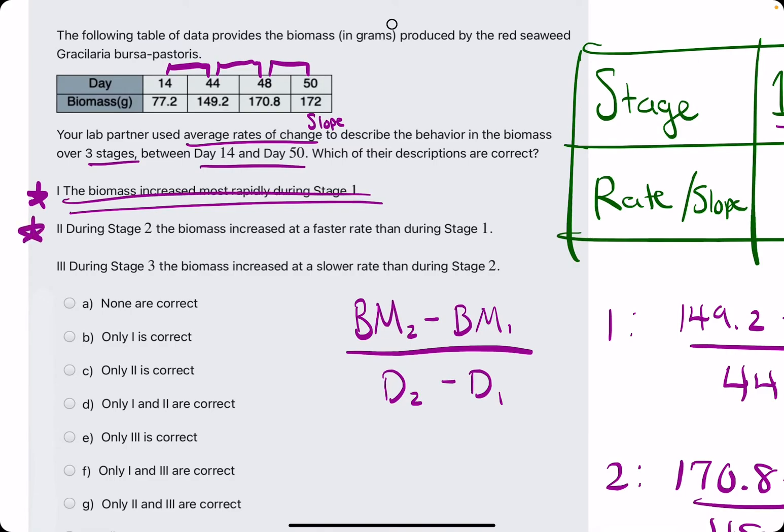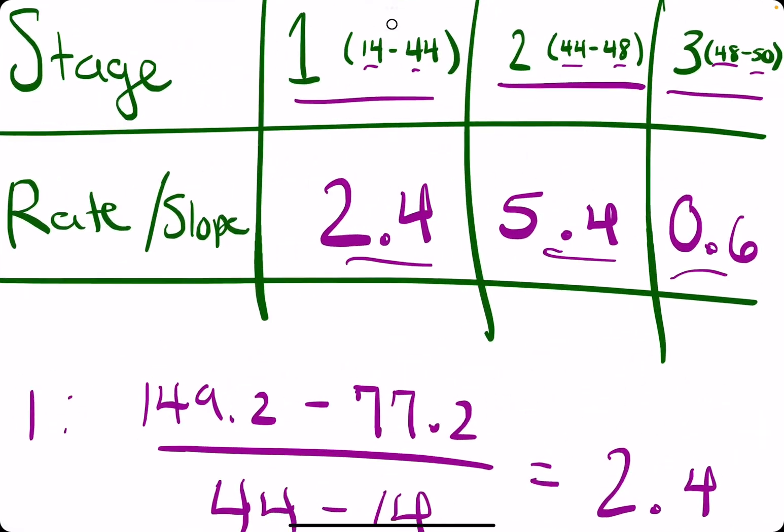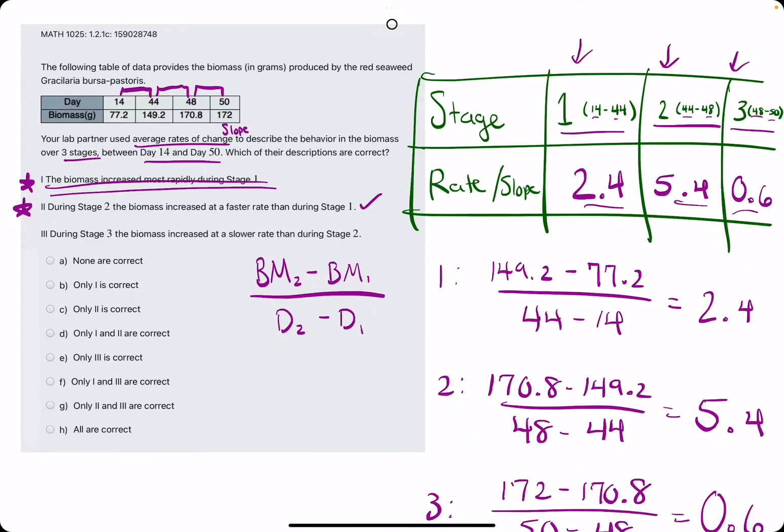Number two. They say during stage two, the biomass increased at a faster rate than stage one. Yes, that is true because 5.4 is greater than 2.4. So true statement there.